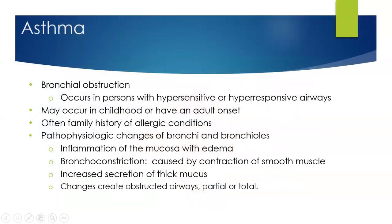Moving on to asthma. Asthma is defined as bronchial obstruction due to hypersensitivity or a hyper-responsive airway. It can occur in childhood or have adult onset, and often occurs with a family history of allergic conditions. It is a pathophysiological change of the bronchi and bronchioles that causes inflammation of the mucosa with edema, bronchial constriction from smooth muscle contractions, and secretion of thick mucus. These changes create partially or totally obstructed airways.